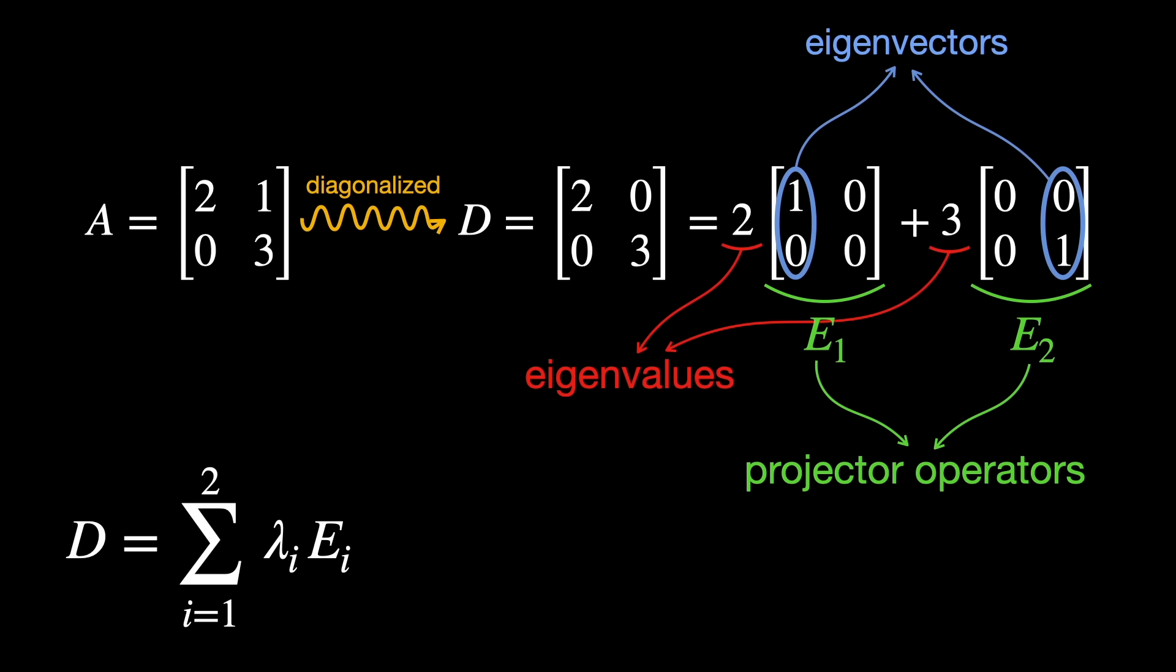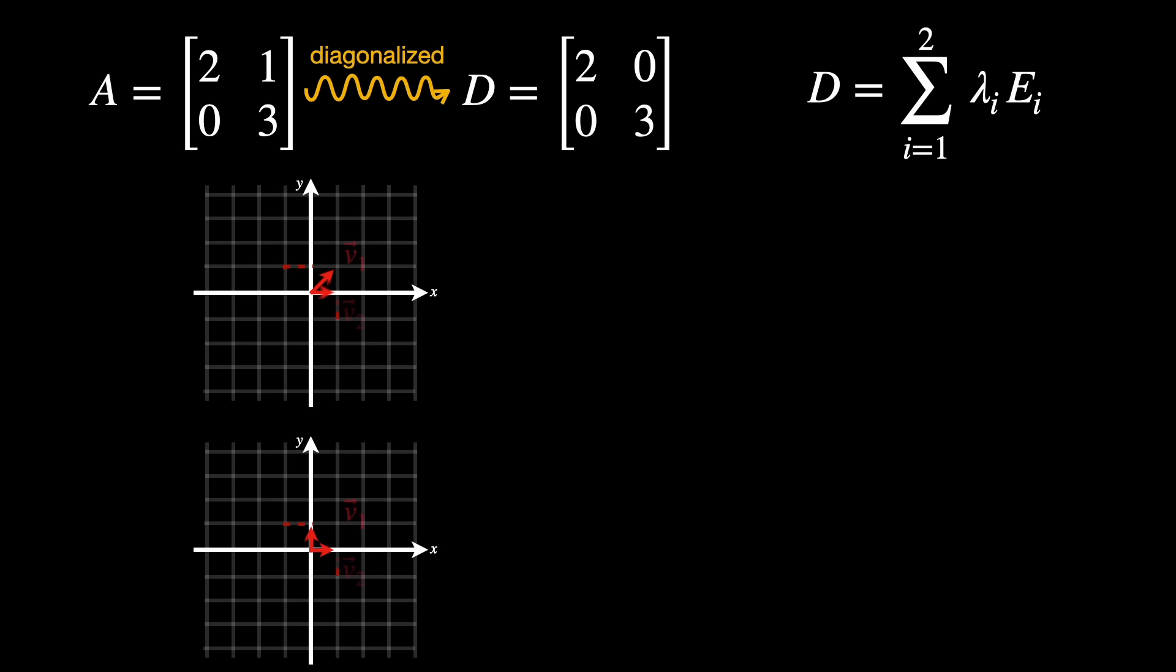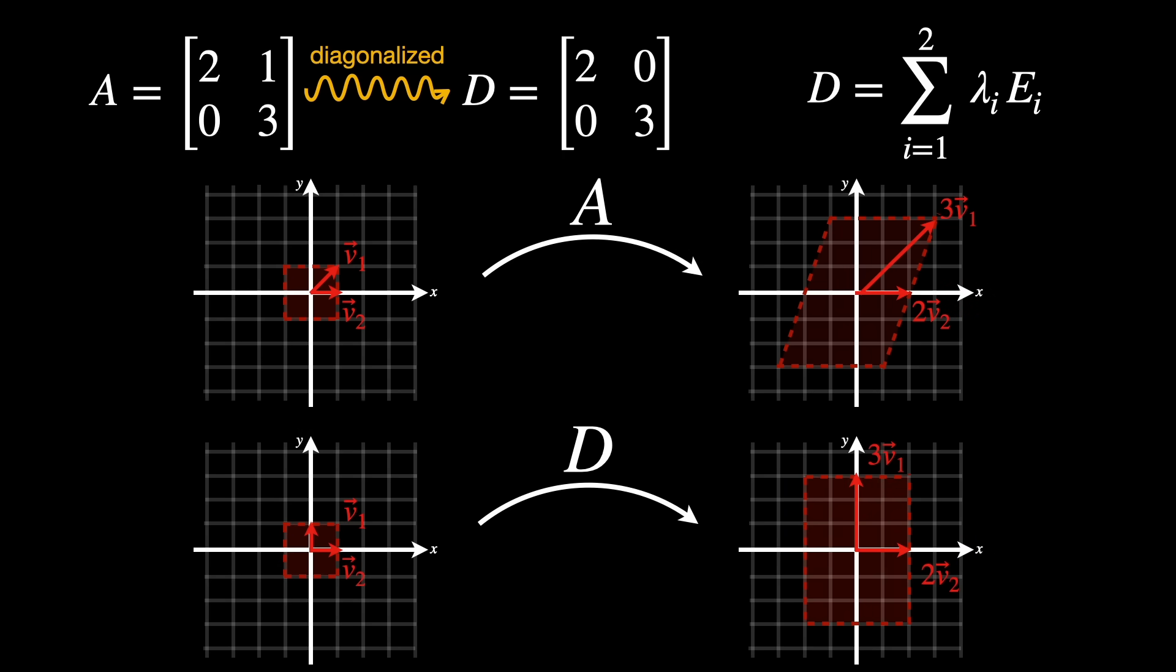Again, check out the PDF link for more details. In this way, the matrix is decomposed into simpler pieces, each acting along a specific direction given by the eigenvectors. These are the one-dimensional eigenspaces spanned by v1 and v2.